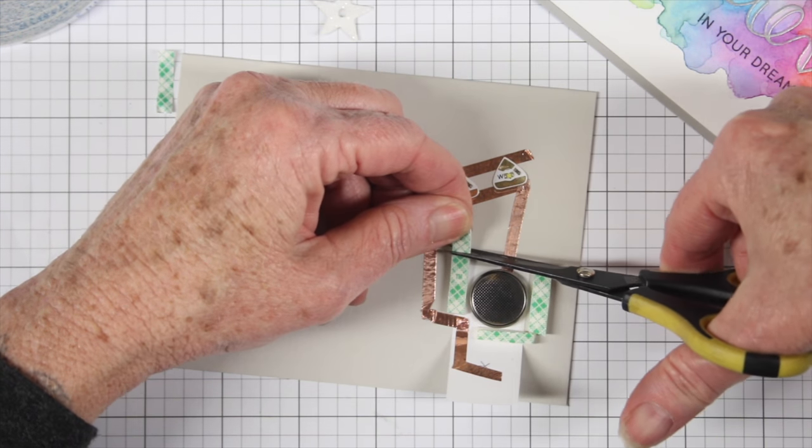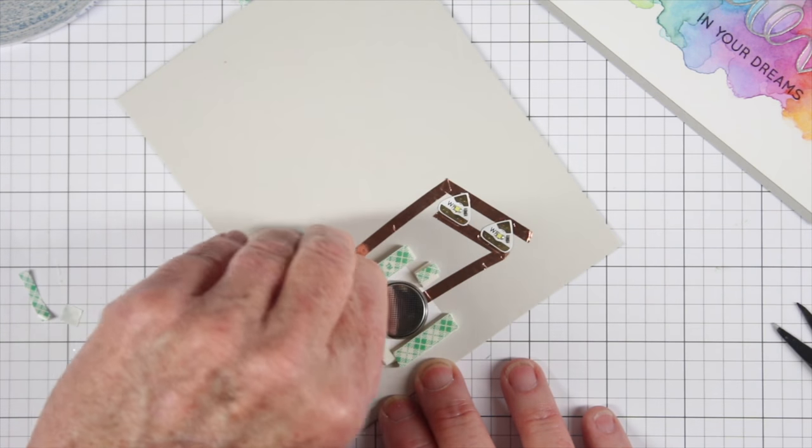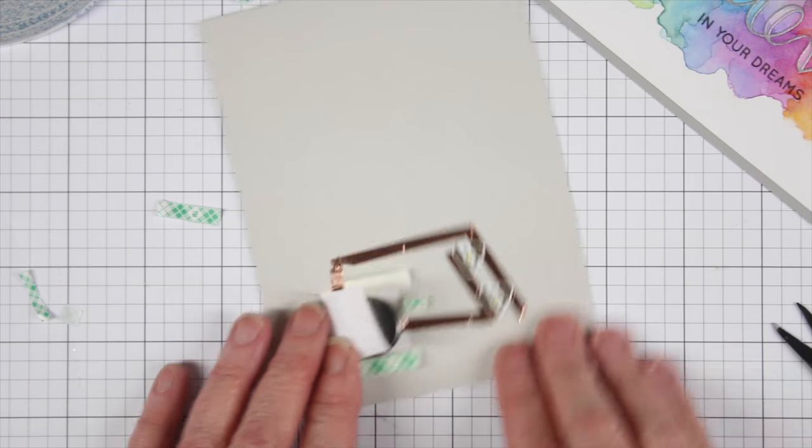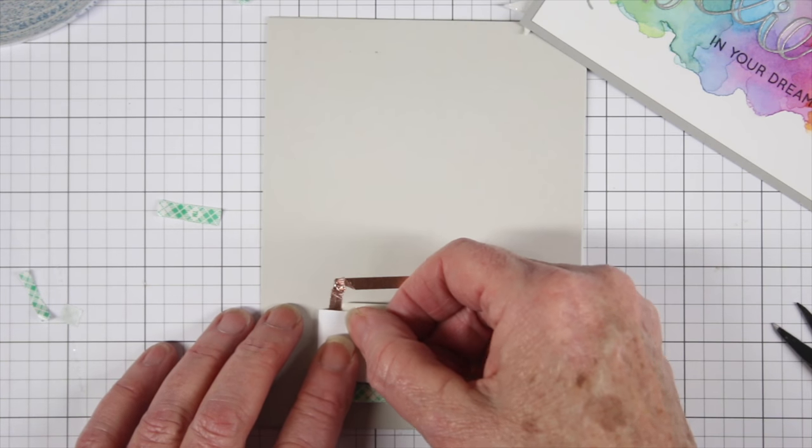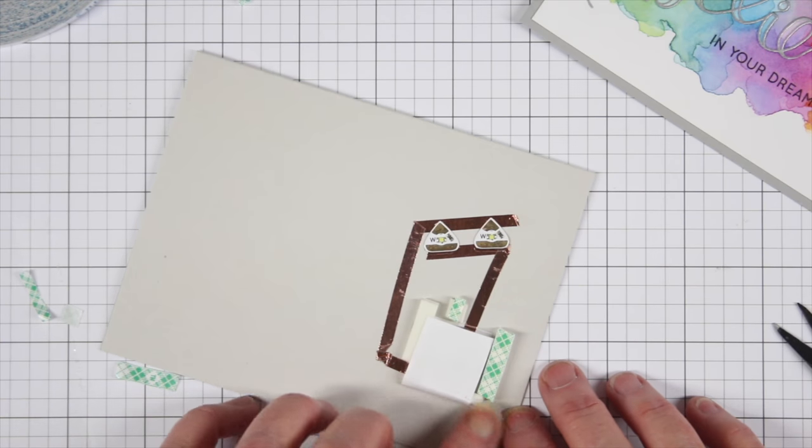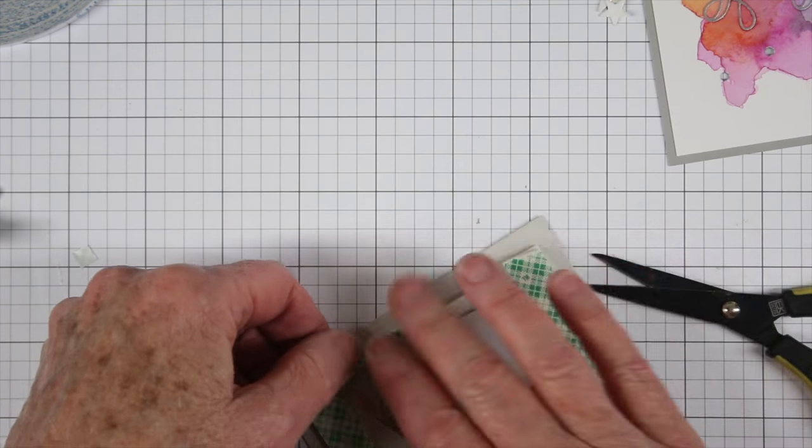I do want to add some foam tape around my battery and depending on your foam tape you either need two or three layers so you want your foam tape to sit above the battery. This way the lights won't turn on unless you're actually pressing on the card. So once I have it sealed up I'll test again to make sure everything's working well.